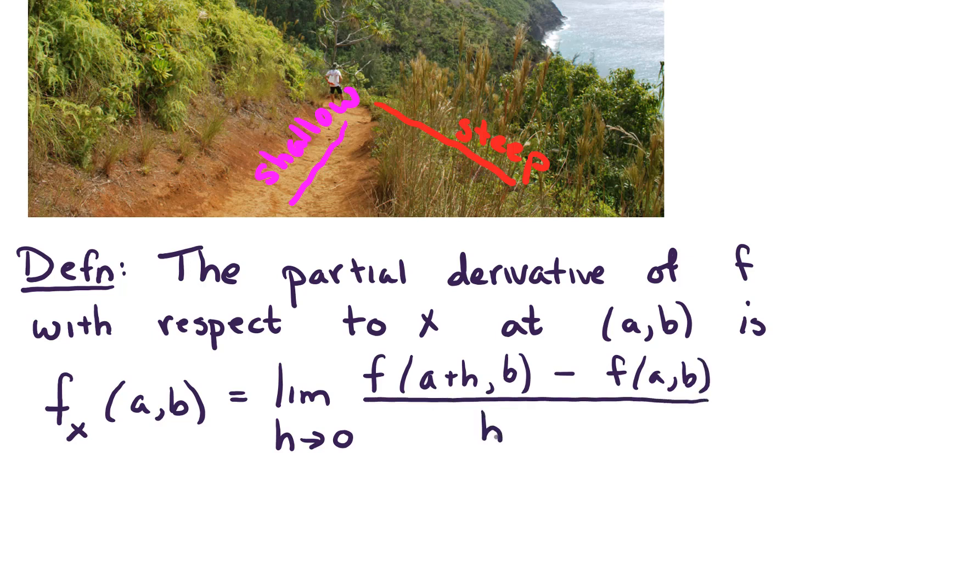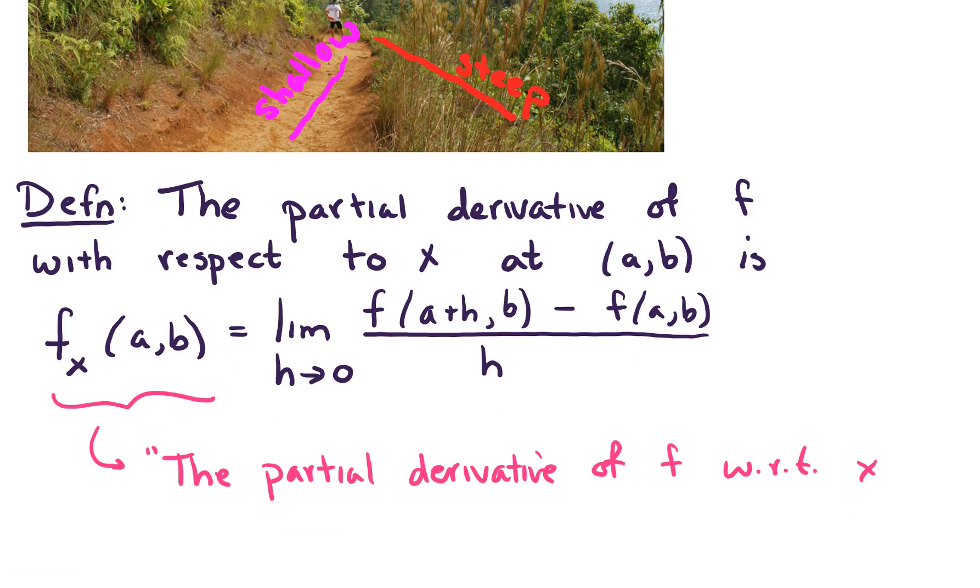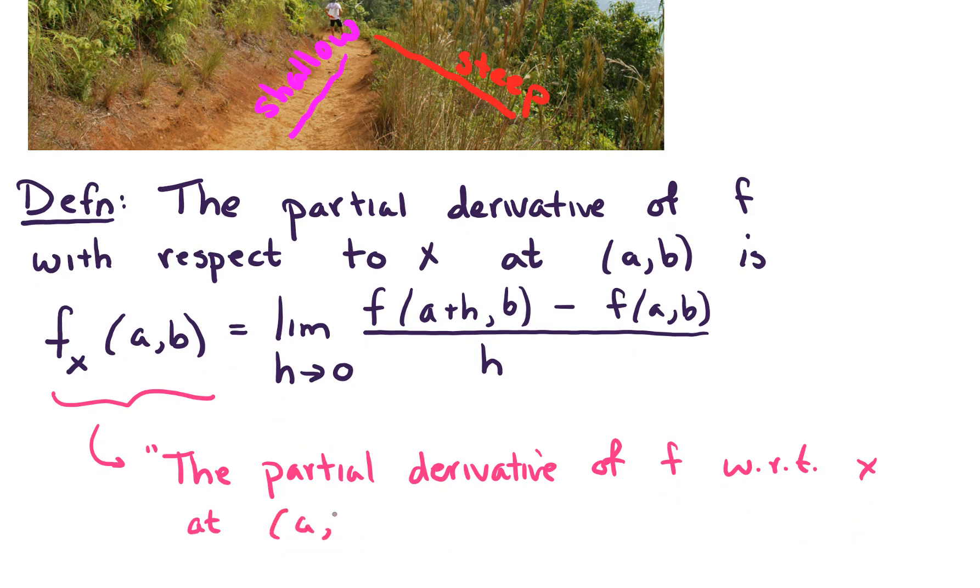Alright, and the way that we read this notation here, we read this as the partial derivative of f with respect to x at (a,b). So that notation there with the little x written as a subscript, that's the notation for the partial derivative of f with respect to x. And then in parentheses, we're going to evaluate that at some point (a,b).